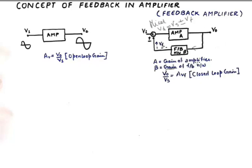So technically it's not a gain. And what's more important is that we look at this term V0 upon Vs. If we were to find the ratio of V0 upon the actual input, the input even before the mixer, that will become the total gain of this feedback amplifier and that gain is known as the closed loop gain.